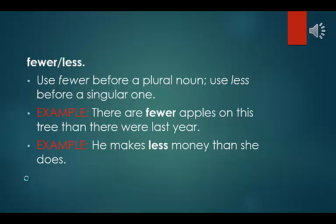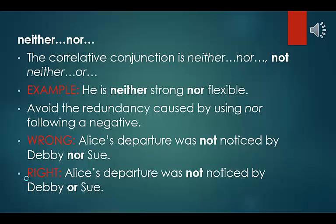Fewer vs. less: use fewer before a plural noun; use less before a singular one. Example: there are fewer apples on this tree than there were last year. Example: he makes less money than she does. Neither/nor: the correlative conjunction is 'neither...nor,' not 'neither...or.' Example: he is neither strong nor flexible. Avoid the redundancy caused by using nor following a negative. Wrong: Alice's departure was not noticed by Debbie nor Sue. Right: Alice's departure was not noticed by Debbie or Sue.